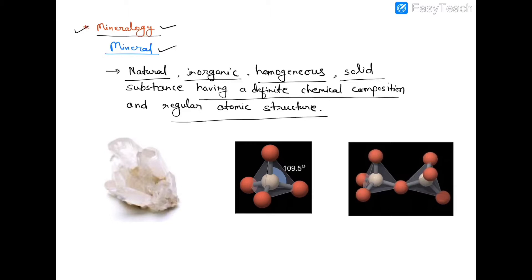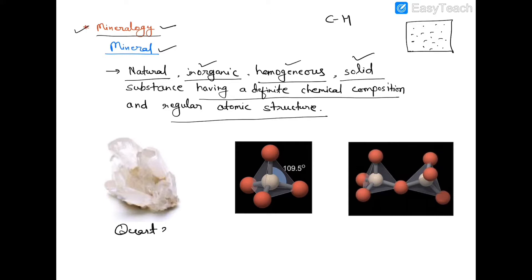To call any substance a mineral, the requirements are: it must be formed by natural process; it must be an inorganic substance. Organic compounds contain carbon-hydrogen bonds, and compounds other than organic compounds are called inorganic substances. It must be homogeneous — when the property of a material is the same at all points, that material is called homogeneous. It must be solid, having a definite chemical composition. For example, in quartz mineral the chemical formula is SiO₂.